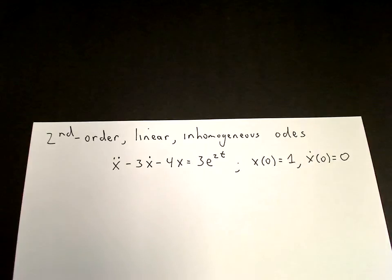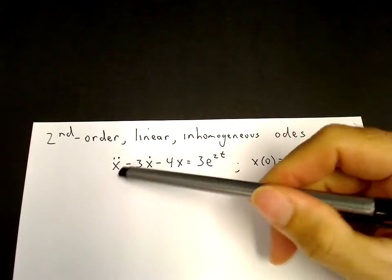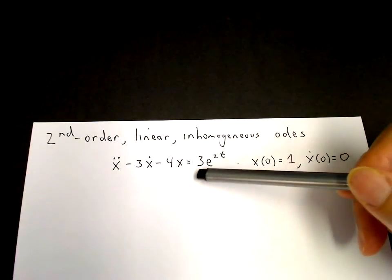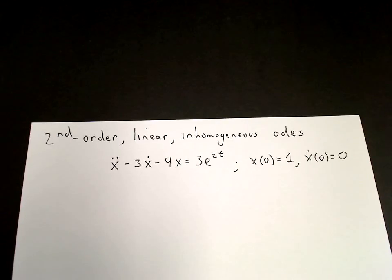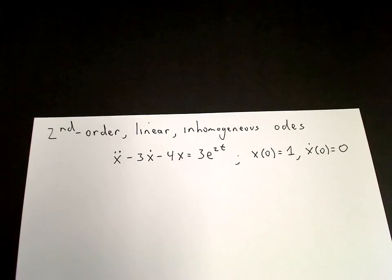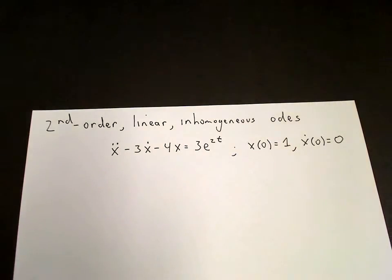In this video, I'll show you the general procedure on how to solve a linear inhomogeneous ODE. I'll do that by showing you how to solve this particular ODE: x double dot minus 3x dot minus 4x equals 3 times e to the 2t, with initial conditions x of 0 equals 1 and x dot of 0 equals 0. The right-hand side is an exponential function, so the solution will depend on that. In later videos, I'll show you how to find the solution when it's a sine, cosine, or polynomial.